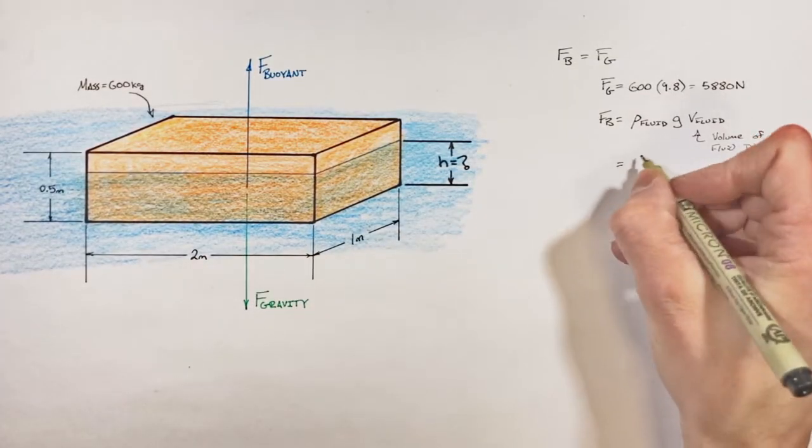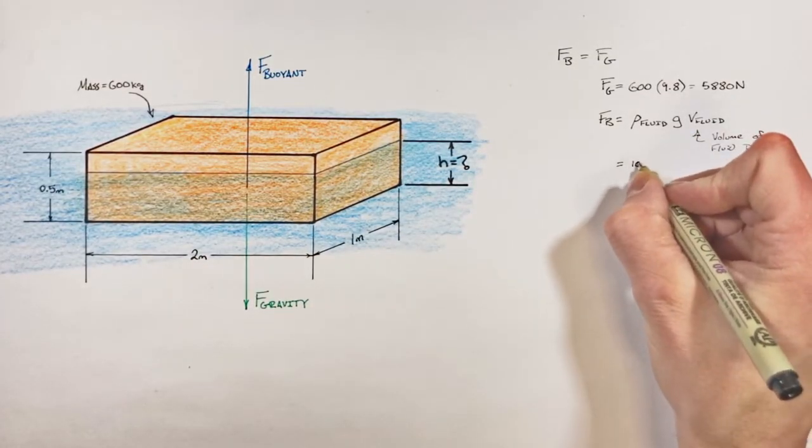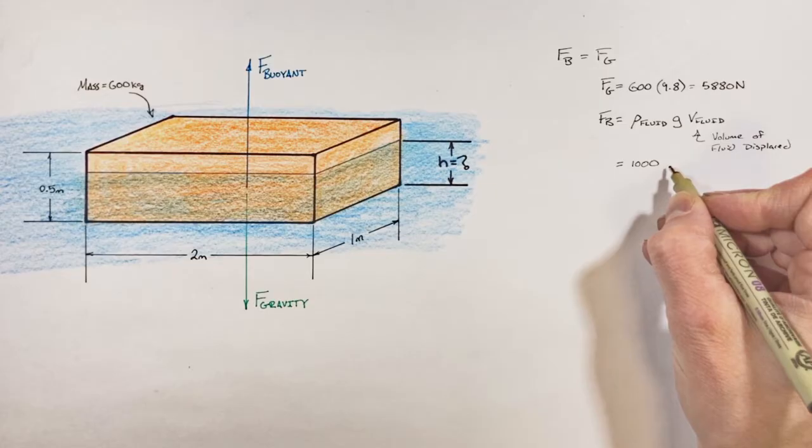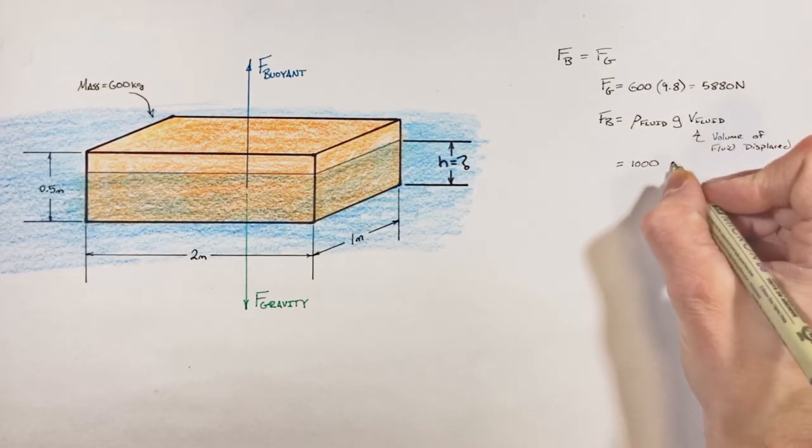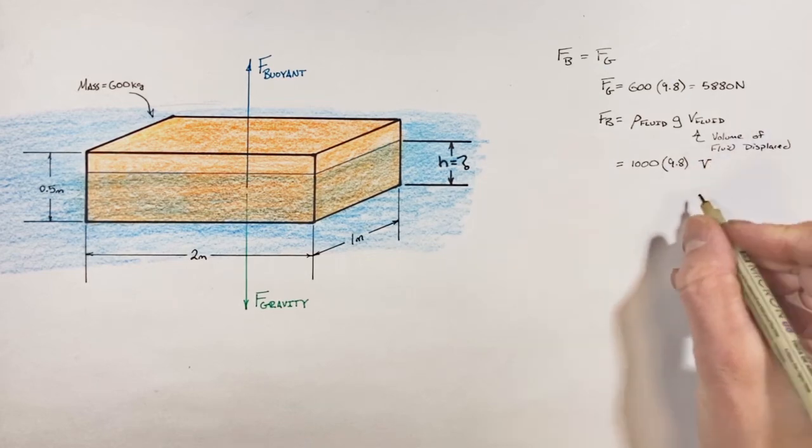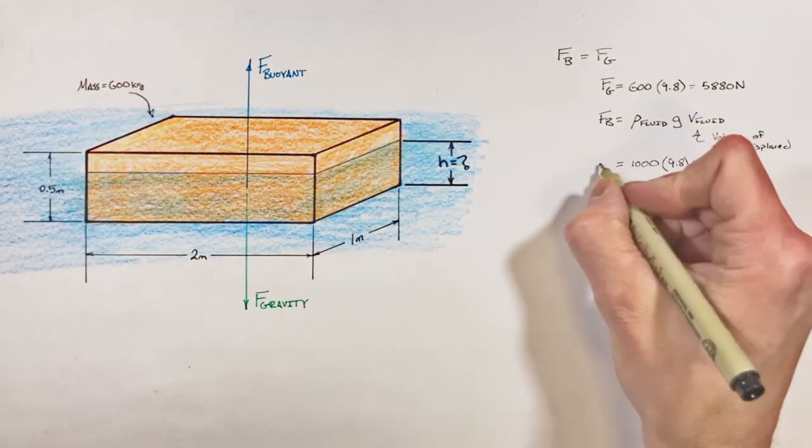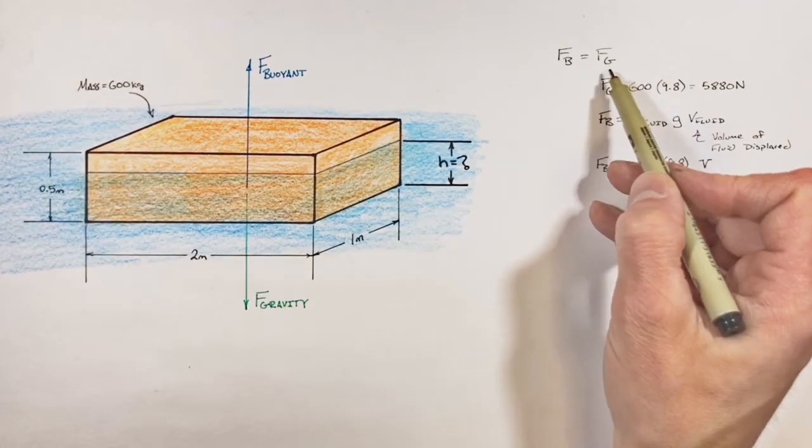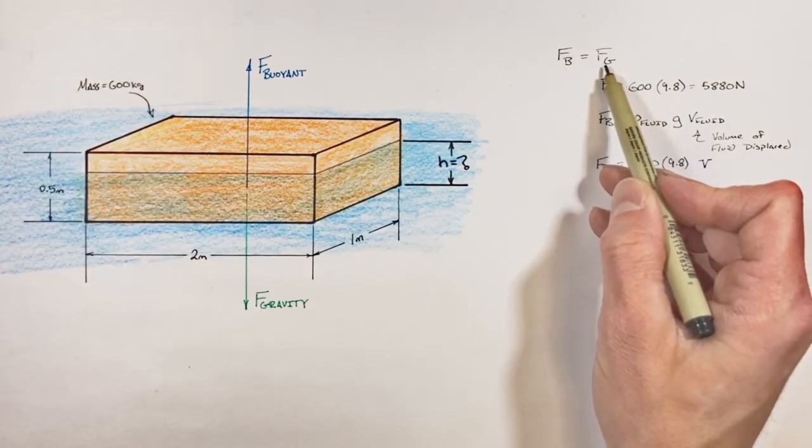Now we're going to treat this as though this is fresh water, so the density of the fluid is simply going to be 1000 kilograms per cubic meter multiplied by the acceleration due to gravity times the volume of our fluid, which I'm just going to show as capital V. So going back up here, setting our buoyant force equal to the force by gravity,